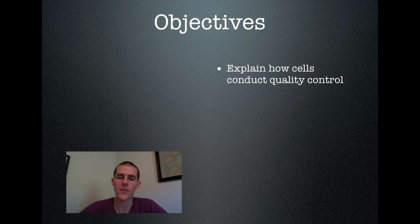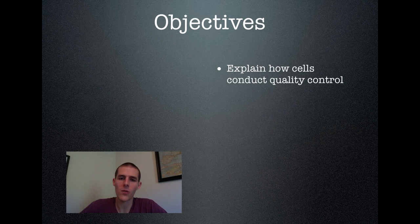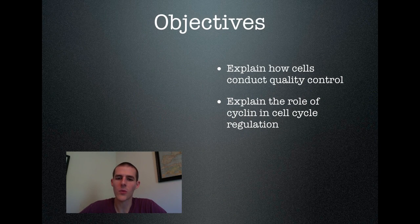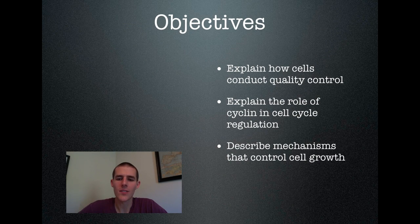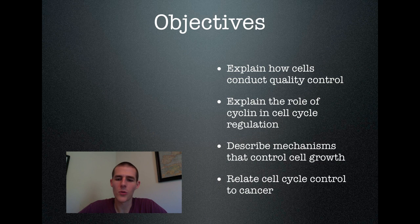First thing you got to know by the end of the video: Explain how cells conduct quality control. Second thing is to explain the role of cyclin in cell cycle regulation. Third, describe the mechanisms that control cell growth. And finally, be able to relate cell cycle control to cancer. That's what we got. Let's go ahead and start talking.